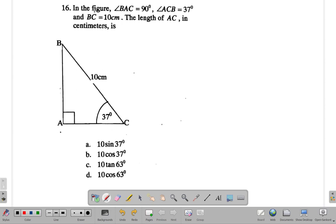In the figure, triangle BAC - remember the angle is right where the middle letter is - BAC is 90 degrees. This little box here already shows 90 degrees so they wouldn't have to write the number 90 here. Angle ACB, remember this little tick crooked arm figure means angle, ACB is 37 degrees. And BC, the length of BC is 10 centimeters. The length of AC in centimeters is what you want.